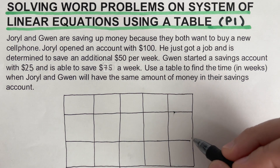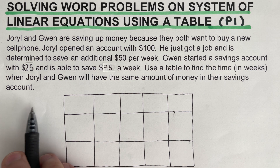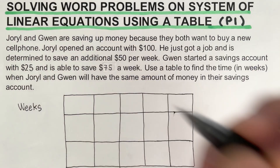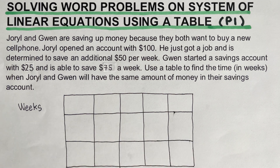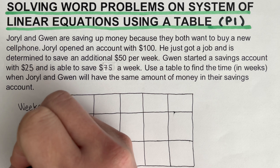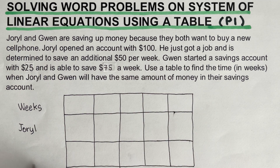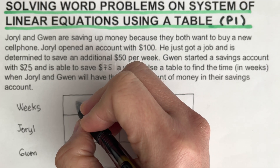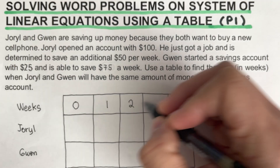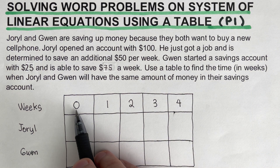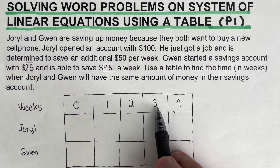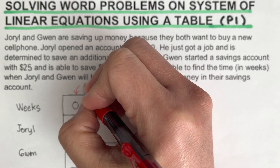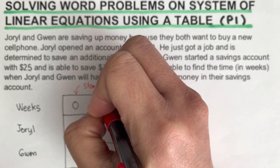We're going to fill this table in. On the first row, we're going to label this as 'weeks' to determine the number of weeks. On the second row will be Joriel's case, and on the third row will be for Gwen. We'll label the weeks starting with zero, one, two, three, and four — meaning zero week, first week, second week, third week, and fourth week. We'll call zero the starting value.